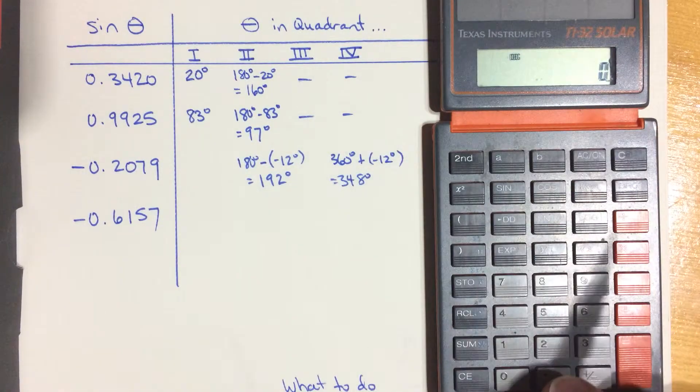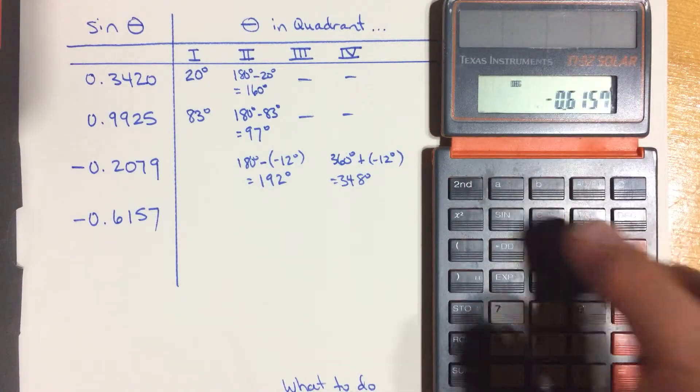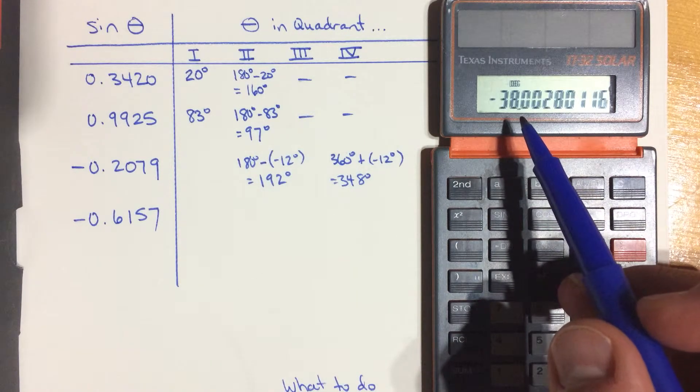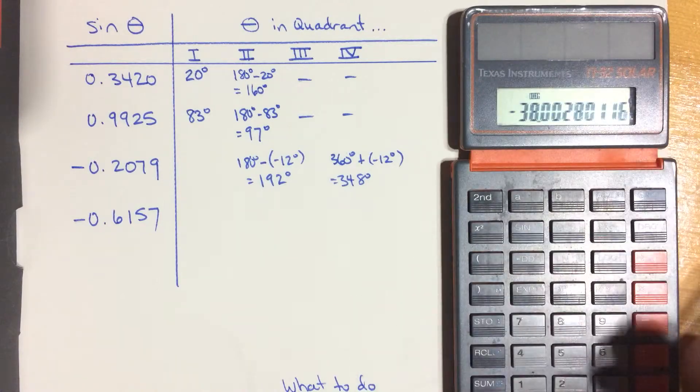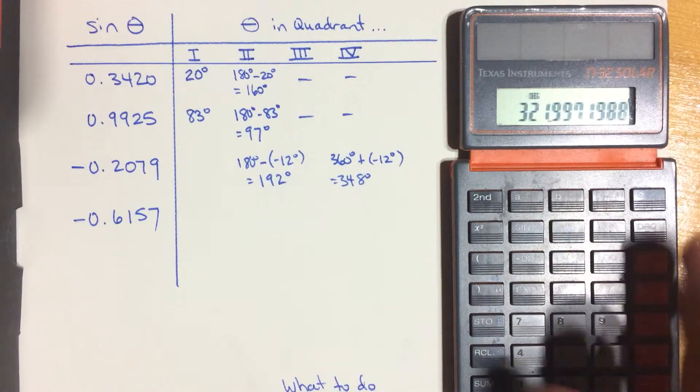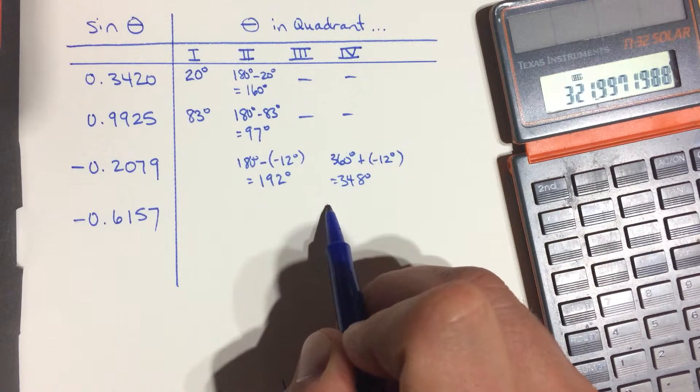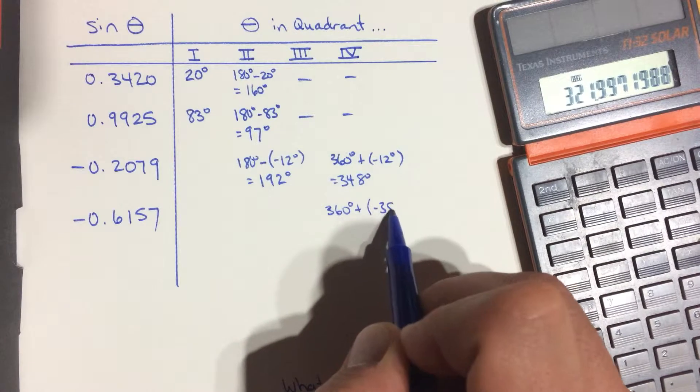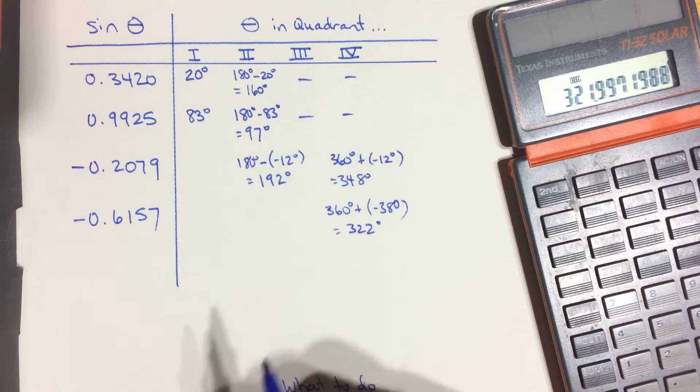And let's do the last one here. 0.6157 negative sine inverse, negative 38 degrees. Well, that's 38 degrees below the 360 mark. So that's about 322. So 360 plus negative 38 degrees, 322 degrees, about.